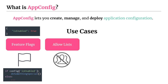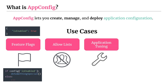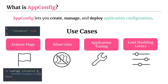Another common use case is allow lists or denial lists — dynamically updating which customers are or aren't allowed to use your application without doing a full deployment. Application tuning is another use case, changing parameters of your app. A more advanced use case is load shedding levers: if a critical dependency goes down and your APIs start failing, you can stub out a simplified response using AppConfig to quickly respond to outages independent of a full deployment.